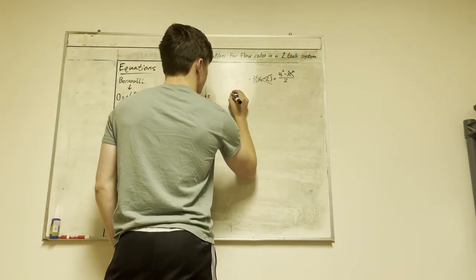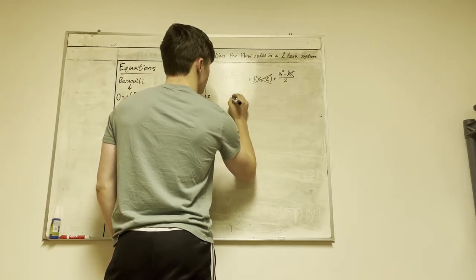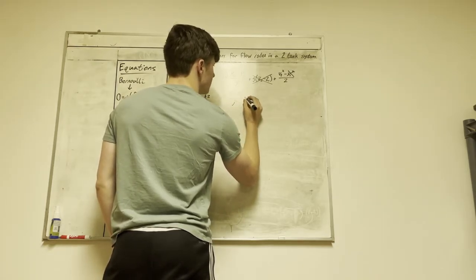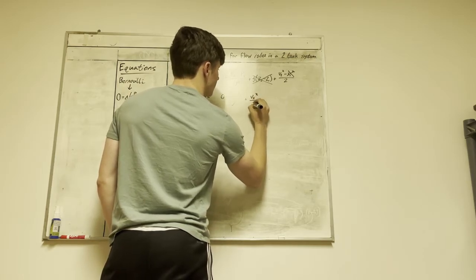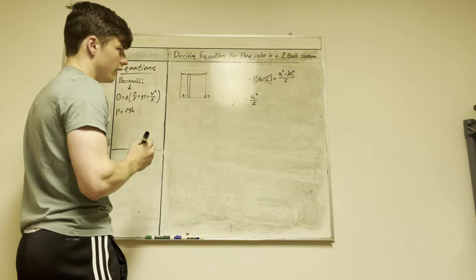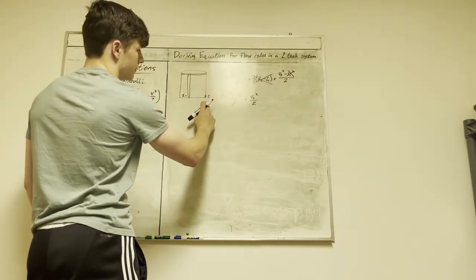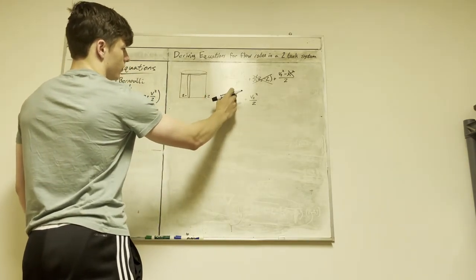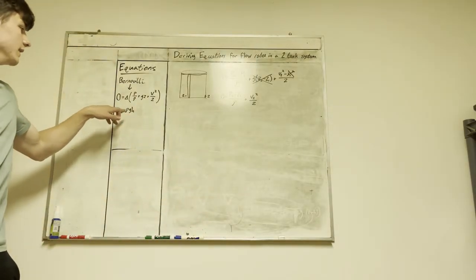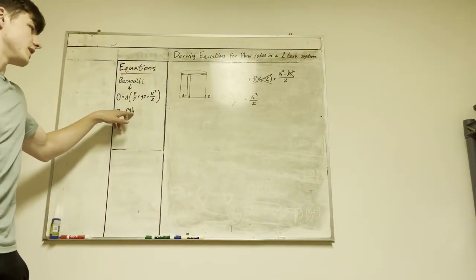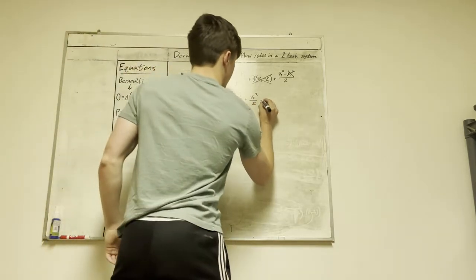With those simplifications, we have: zero equals p2 minus p1 over the density, plus v2 squared over two. The pressure at point two is zero, and we can substitute p1 equals rho times g times h.